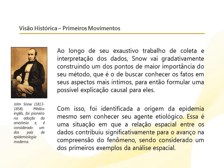Através de uma visão espacial, da relação entre os eventos e um ponto central, Snow identificou a origem. Por coincidência, ele veio a falecer em 1858 por cólera, numa pandemia de cólera asiática. Embora tenha identificado a origem da epidemia, não tinha conhecimento do agente etiológico que causava cólera. Mesmo assim, essa relação espacial entre os dados contribuiu significativamente para o avanço na compreensão do fenômeno, sendo considerado um dos primeiros exemplos da análise espacial.